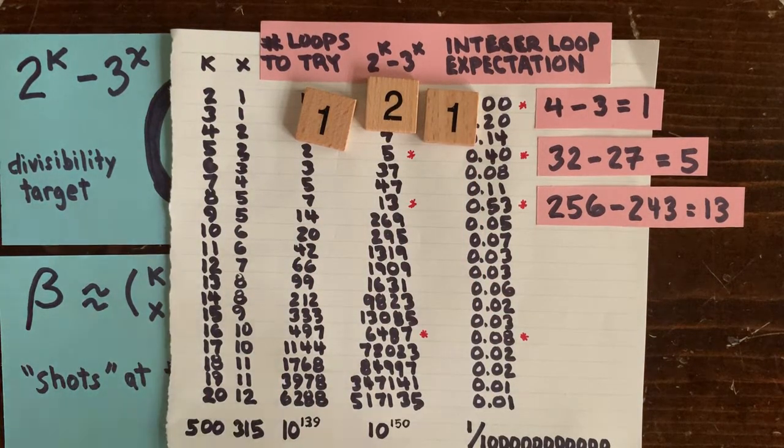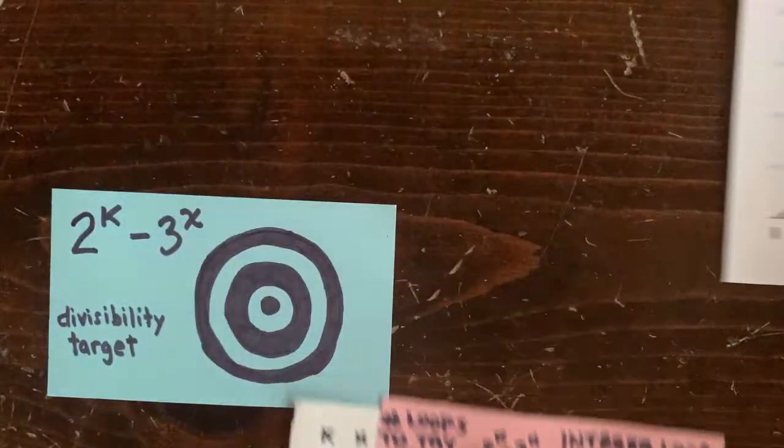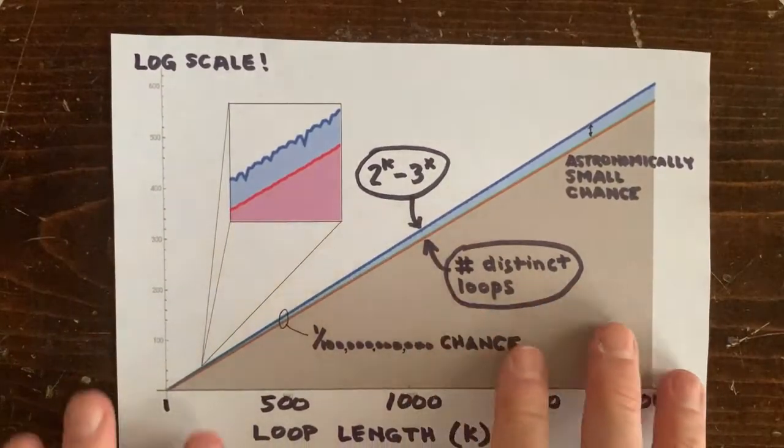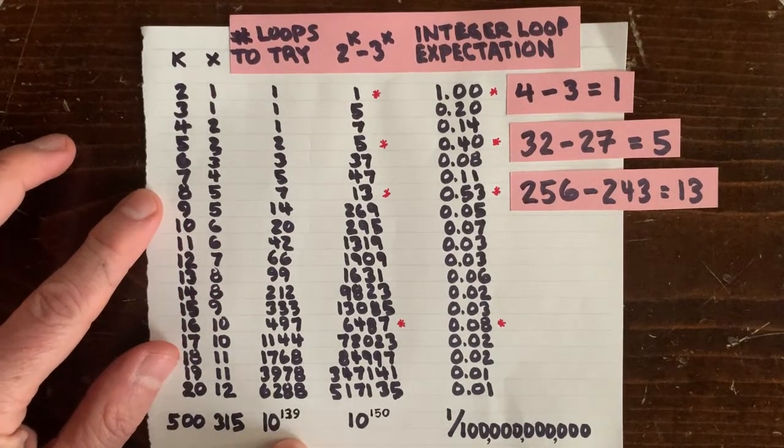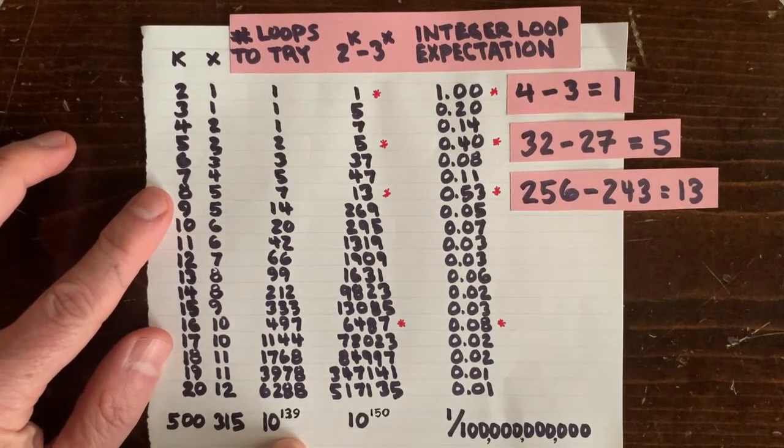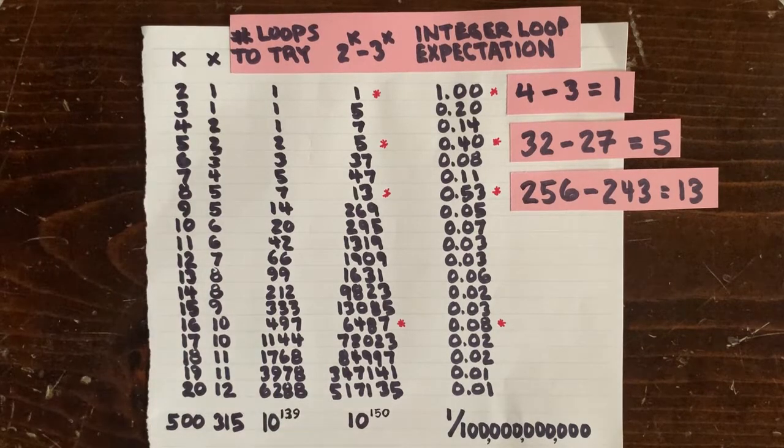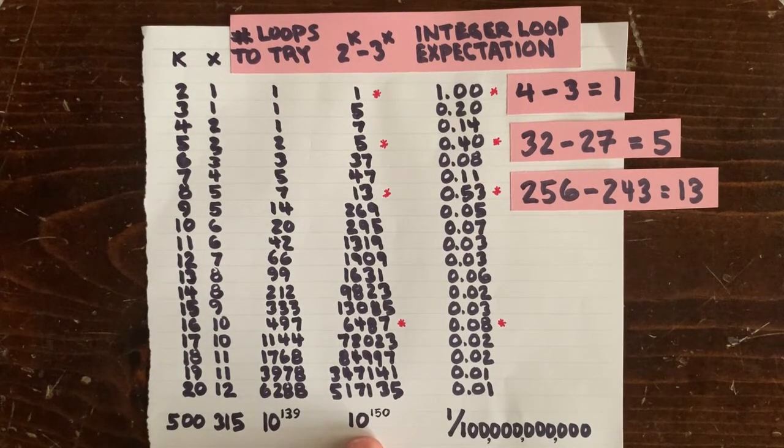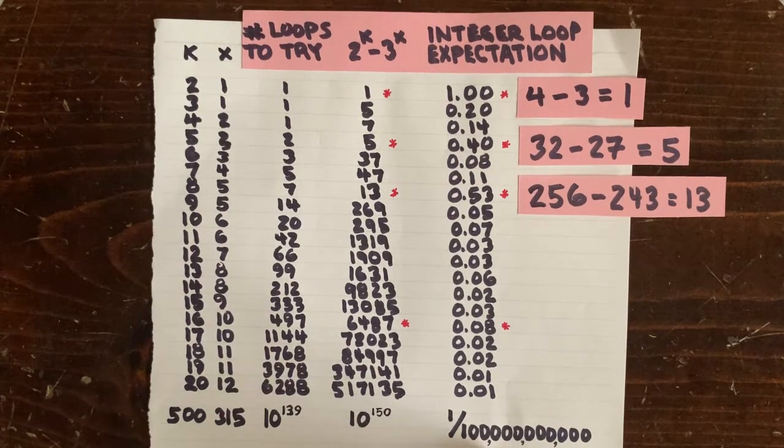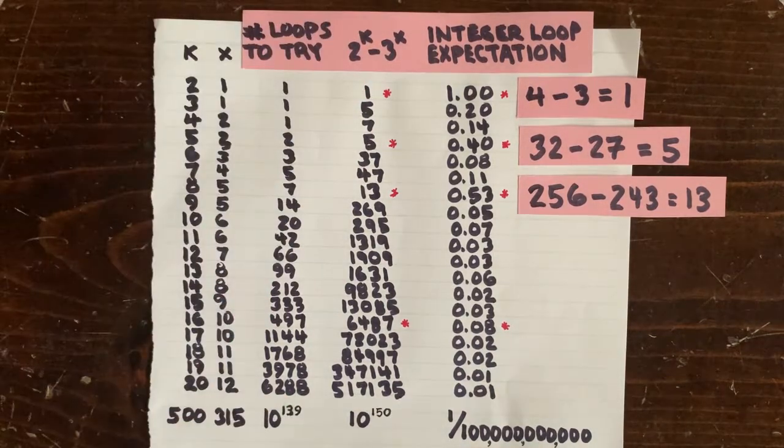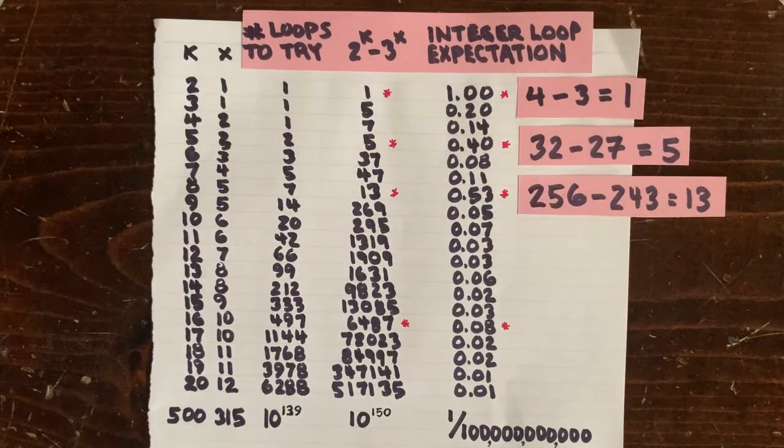So let's keep going past k equals 20 and see what happens. If we look at k equals 500, we have a ton of ways to arrange operation sequences of length 500. Actually 10 to the 139th ways. But some shot would have to produce a beta divisible by 2 to the k minus 3 to the x, which is 10 to the 150th. So there's only really a 1 in 100 billion chance of there being an integer loop of length 500 anywhere. And it just seems to get tougher from there.